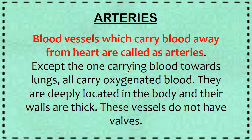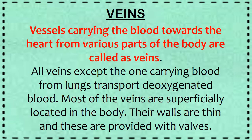Arteries are deeply located in the body and their walls are thick. They do not have valves. The second type of blood vessel is veins. Vessels carrying blood towards the heart from different parts of the body are called veins. All veins, except the one carrying blood from the lungs, transport deoxygenated blood — meaning the saturation of oxygen in this blood is less. Most veins are superficially located, meaning on the top surface. As we can see near our wrist, we see blue or green lines — those are the veins. Their walls are thin and they are provided with valves.